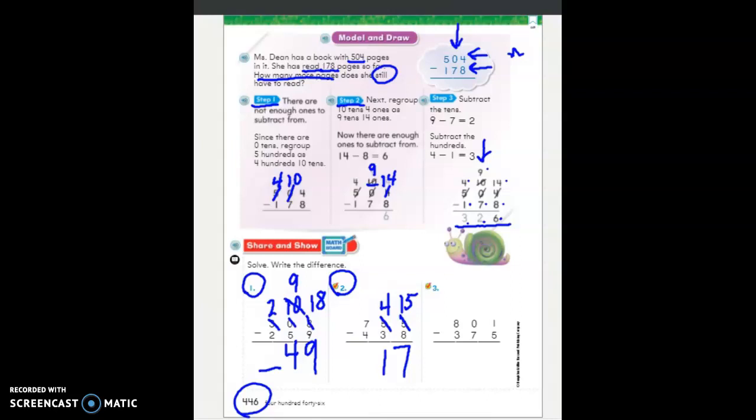4 take away 3. Guess what? I don't need to regroup. 4 take away 3 is 1. So no double regrouping here. 7 take away 4, count back or count up and that is 3. So this one was the easiest so far, wasn't it? It's kind of like our normal subtraction.